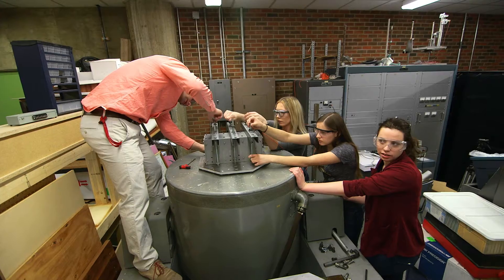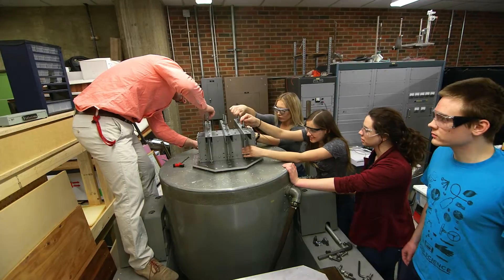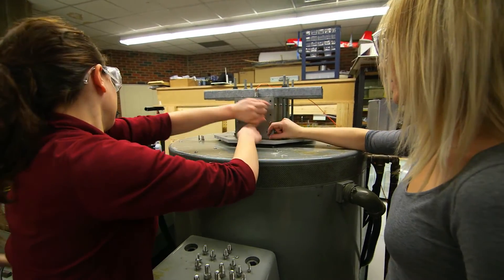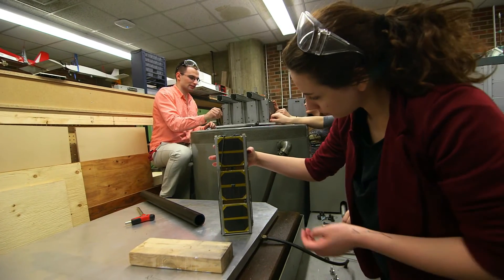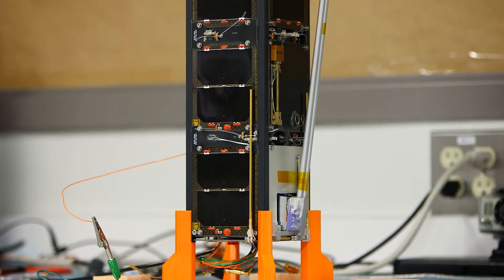The AlbertaSat project is a student-led initiative here at the University of Alberta. We're building what's called a Cube satellite. It's a universal standard where one cube is 10 by 10 by 10 centimeters. And we've decided to take three of them and put them together. So it's about the size of a loaf of bread.